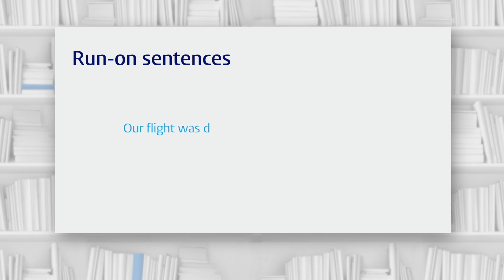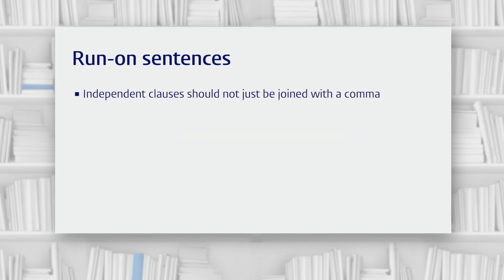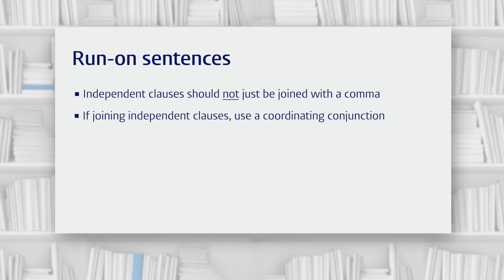It is possible to put more than one independent clause in the same sentence. However, you need to take care about how you join them together. Importantly, you shouldn't simply stick two independent clauses together with a comma. If you do that, you get what's called a run-on sentence. So, to join two independent clauses together, you can't just use a comma — what you can do is use a coordinating conjunction.